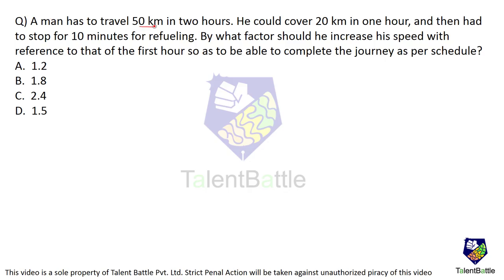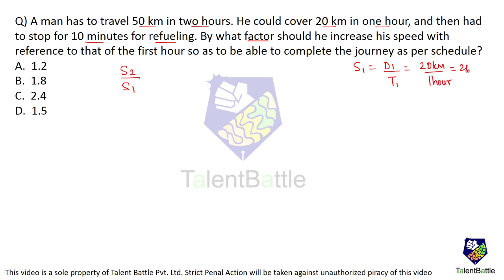A man has to travel 50 kilometers in two hours. He could cover 20 kilometers in one hour and then had to stop for 10 minutes for refueling. By what factor should he increase his speed with reference to that of the first hour, so as to complete the journey as per schedule? We need to find the factor by which he should increase speed. The first speed is distance covered divided by time: 20 kilometers in one hour, so the first speed is 20 km/h.